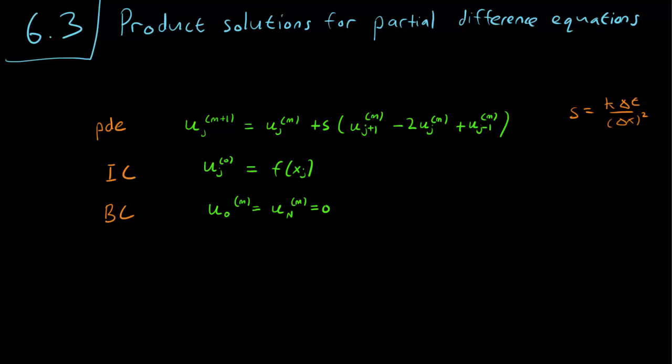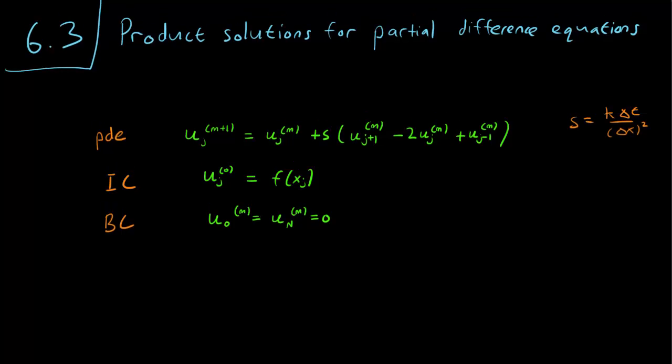It turns out to understand how solutions of this partial difference equation work, and to understand when a solution is stable or unstable, it is helpful to go back to our tried and true method of looking for product solutions. So let's do that. We start by writing u_j^m as f_j times g_m. So these f_j and g_m are constants. f_j is a constant that just depends on space, and g_m is a constant that just depends on time.